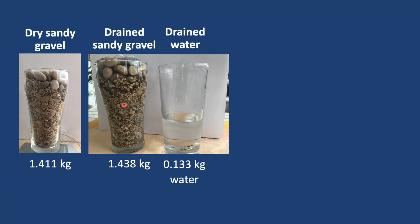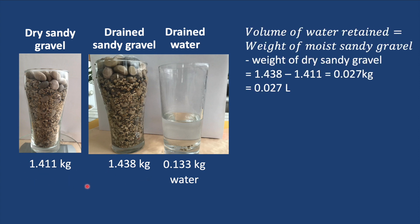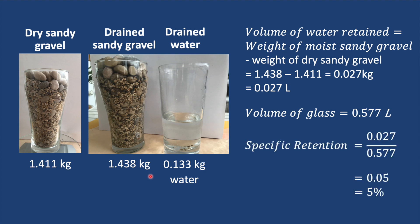The moist sand will be heavier than the dry sand because of specific retention. So the way we calculate how much water has been retained is by taking the weight of the wet sandy gravel minus the weight of the dry sandy gravel. We end up with 0.027 kilograms, which is equivalent to 0.027 liters of water. The volume of our glass is 0.577 liters. We can then calculate the specific retention by dividing this volume of water retained by the volume of the sample, and we end up with 0.05 or 5 percent.